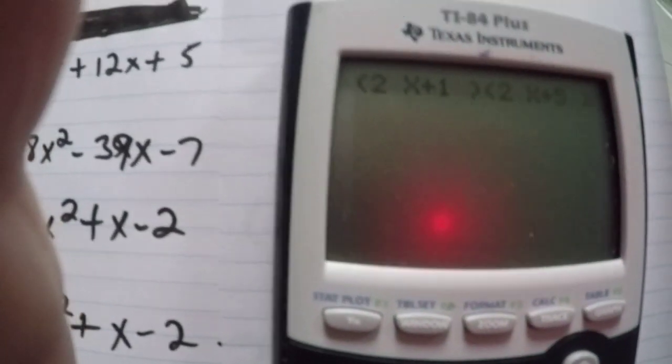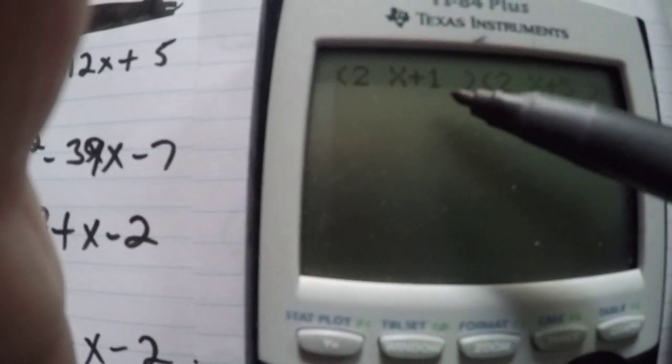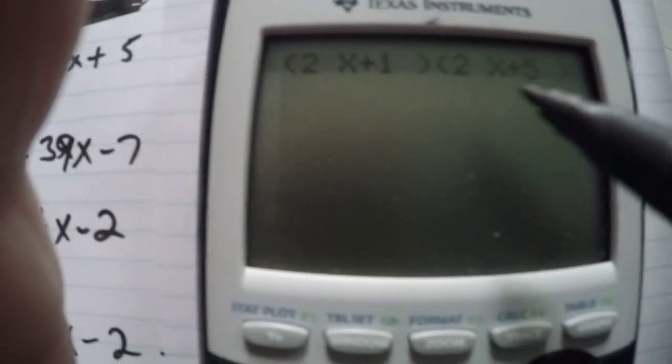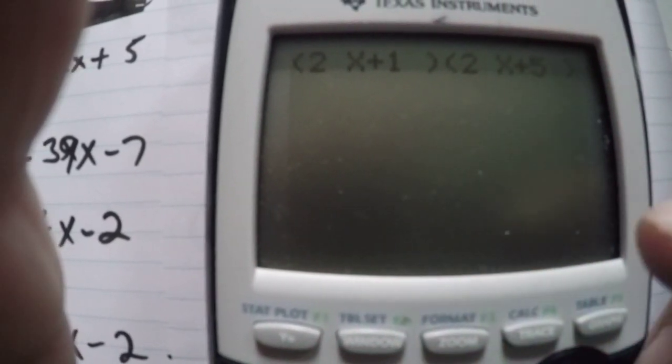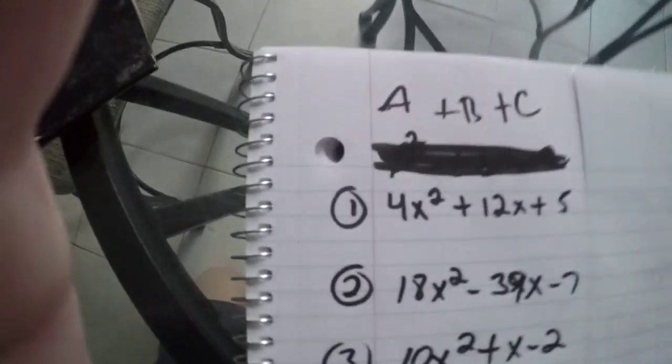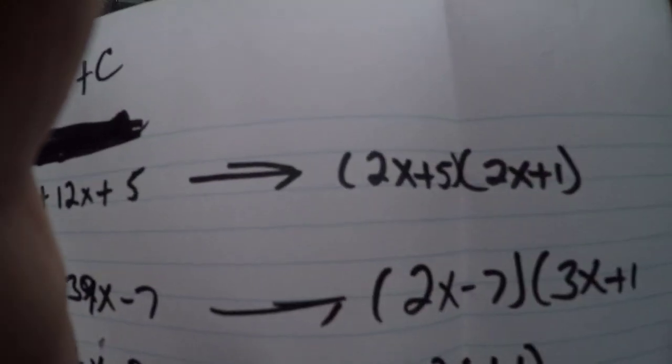So now it will come out this. It will be 2x plus 1 parentheses, 2x plus 5 parentheses. And that's the answer.